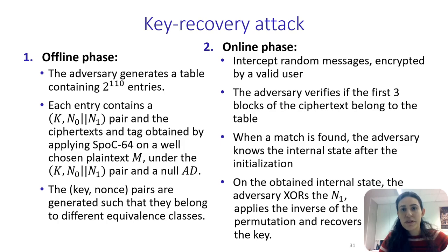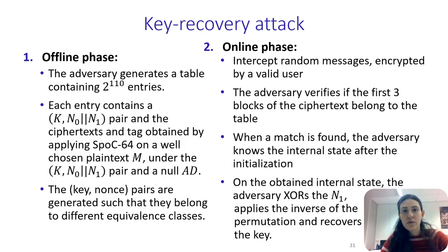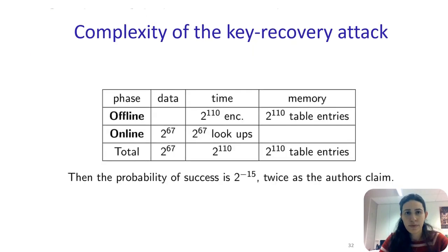For the online phase, we intercept random messages encrypted by a valid user. The adversary then verifies if the first 3 blocks of the intercepted ciphertext belong to the table — we choose 3 blocks because we believe this length is enough to ensure uniqueness. A match means the adversary knows the internal state after initialization. To go backwards from this state, the adversary exhausts N1, which is the second half of the nonce, and then applies the inverse permutation to recover the initial state and the key. The total complexity is 2^67 data, 2^110 time, and 2^110 table entries as memory.